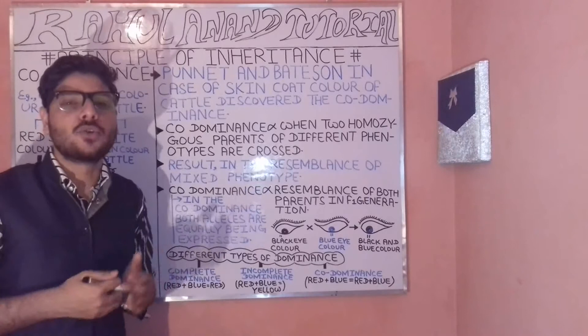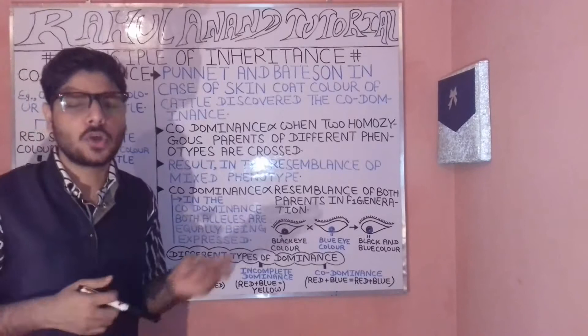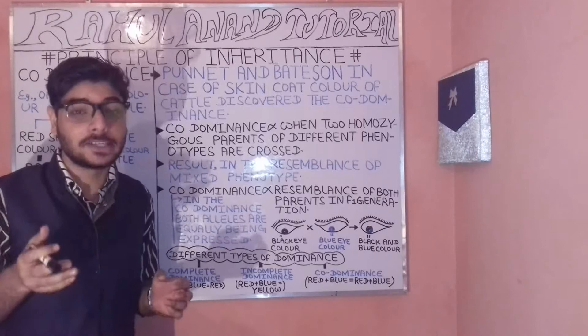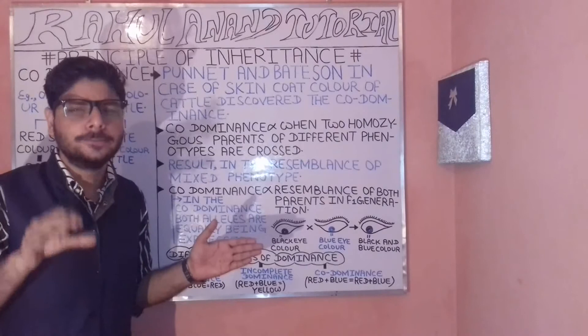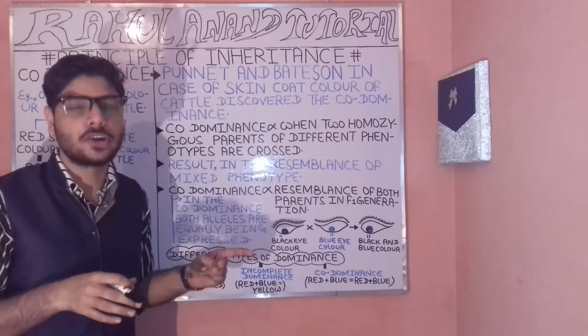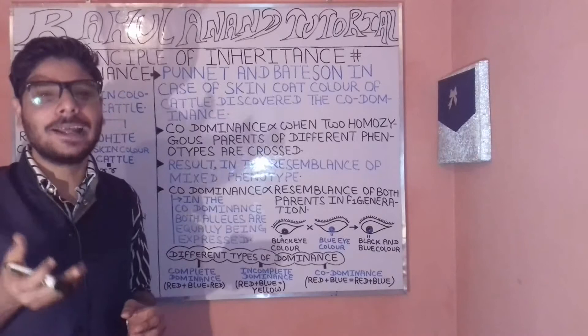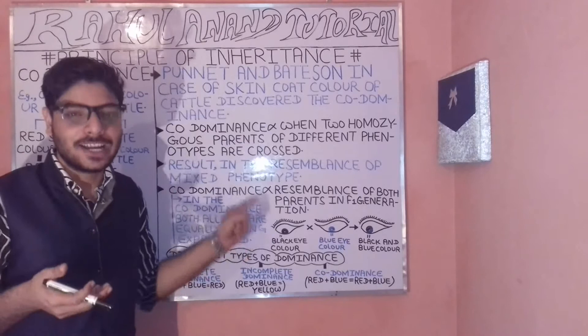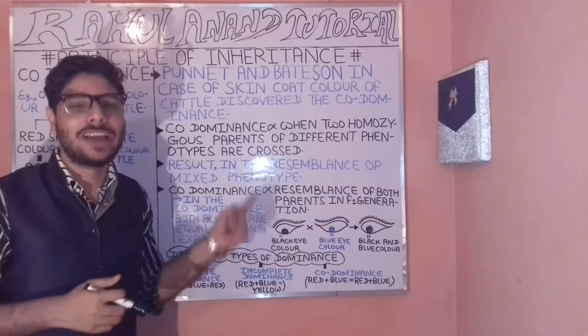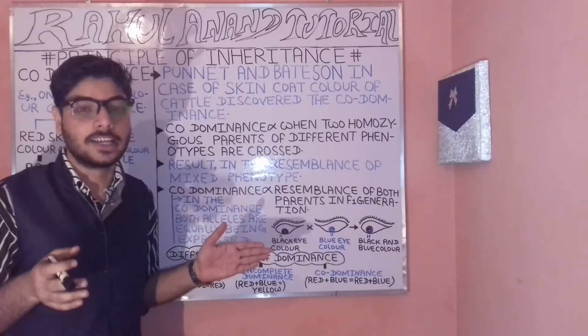Now, what are phenotypes? We have two types of things: genotype and phenotype. Genotype refers to the resemblance in terms of genetic sequence, whereas phenotype refers to the physical appearances — characteristics like tallness, dwarfness, skin color, white skin color, or red skin color.